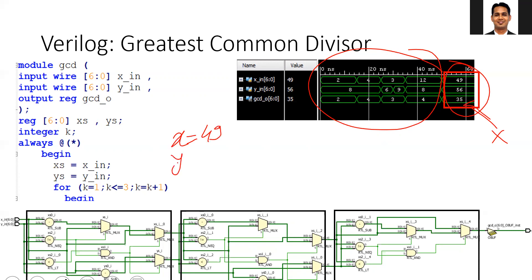Let's see why this happens. Suppose I start with X equals 49 and Y equals 56. After the first iteration, I get X equals 49 and Y equals 7. At the second iteration, I get X equals 42 and Y equals 7. At the third iteration, I get X equals 35 and Y equals 7.